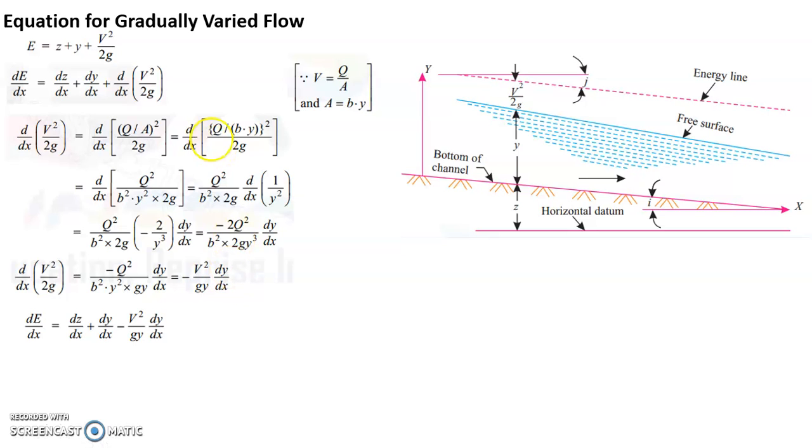So we will substitute this to the basic equation, the second equation. So you have DE by DX equals to DZ by DX plus DY by DX minus V square by GY into DY by DX. See we all know that V by square root of GY is Froude's number. And Froude's number square is V square by GY. So in the next steps we will substitute V square by GY as Froude's number square.